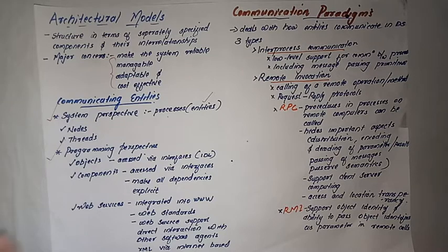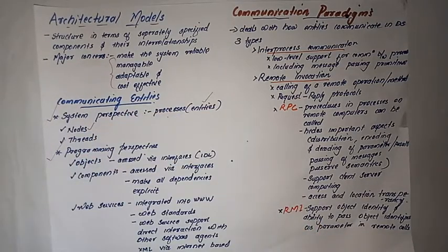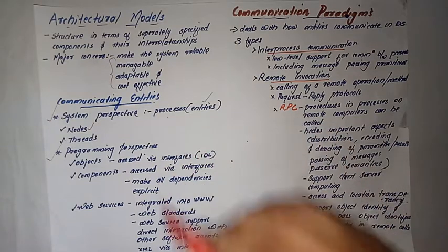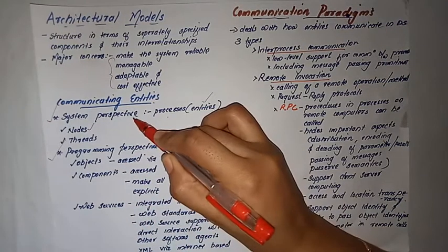Processes are the entities; they communicate and share data in the system. In the system perspective, we have nodes, and the concept here is that nodes support processes. We also have threads, which are lightweight processes, and we have communication between these components.